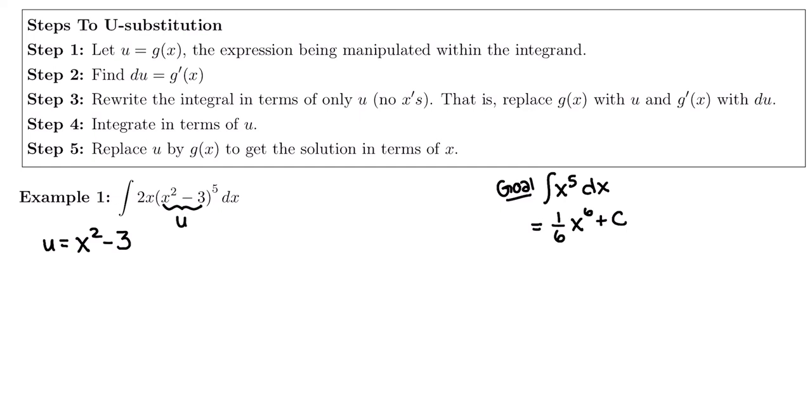My first thing is picking out u to be the expression. There's my u to the fifth, which is going to integrate just like x to the fifth. We just need to do some other steps before we're allowed to take the antiderivative. So you pick out which one is u. In this case, it's the second factor.